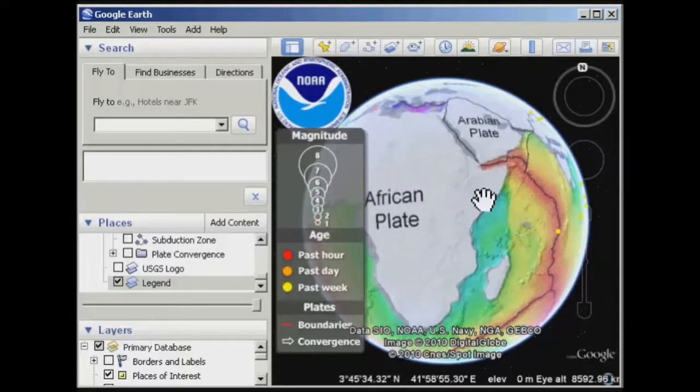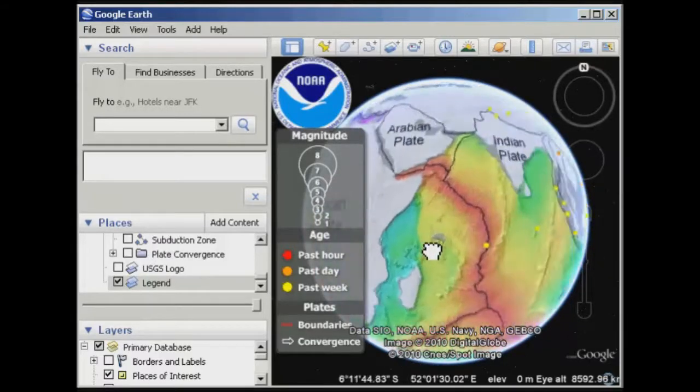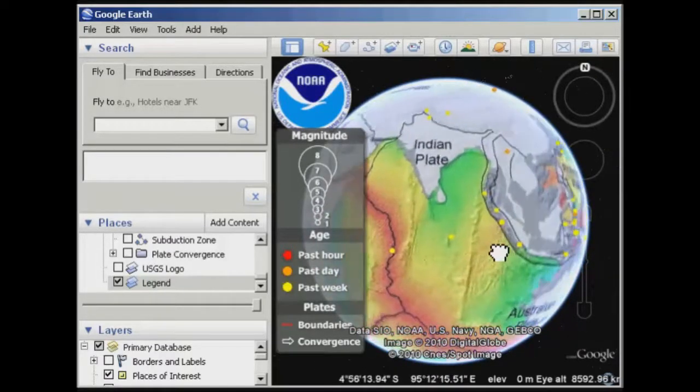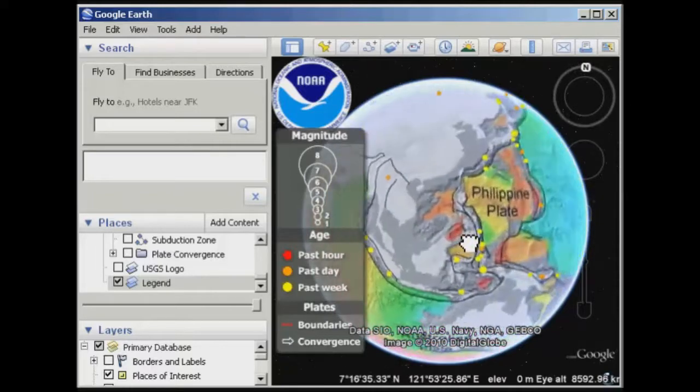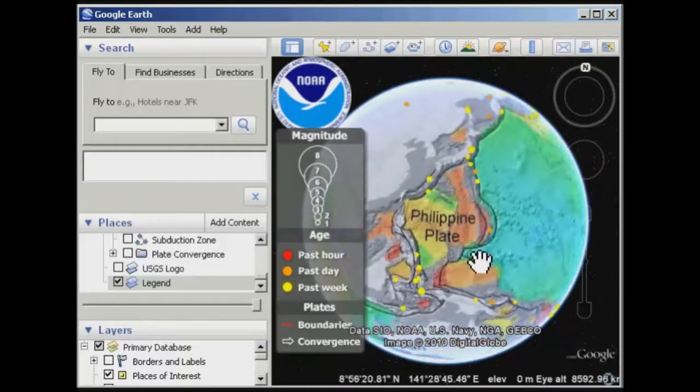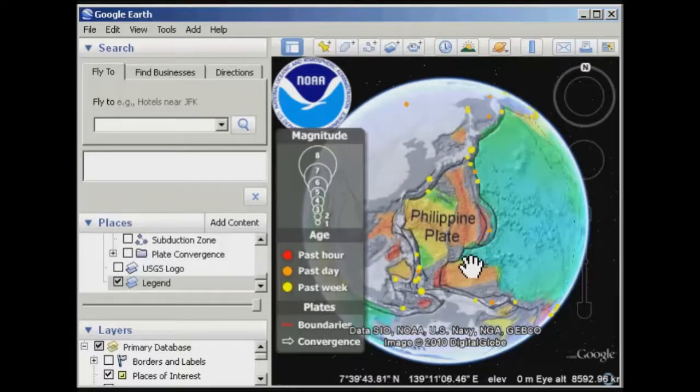But have a look at the association with the plate boundaries and where these earthquakes are occurring. What you tend to see is that they're occurring predominantly along the plate boundaries. And again, we discussed this in the lectures for week two and week three.